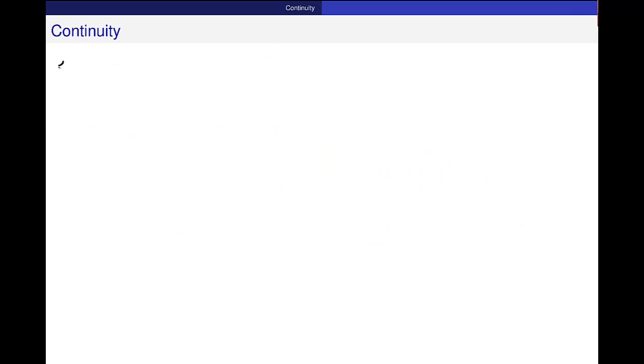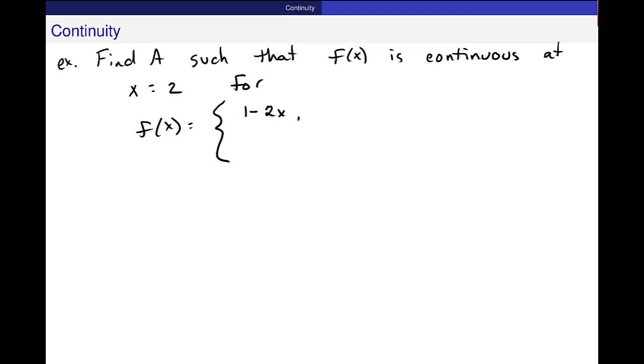I want to do one more example to make sure that we get this idea of continuity. Find a such that f(x) is continuous at x is equal to 2 for this function. f(x) is equal to 1 minus 2x for x less than 2, and ax squared plus 2x minus 3 for x greater than or equal to 2.